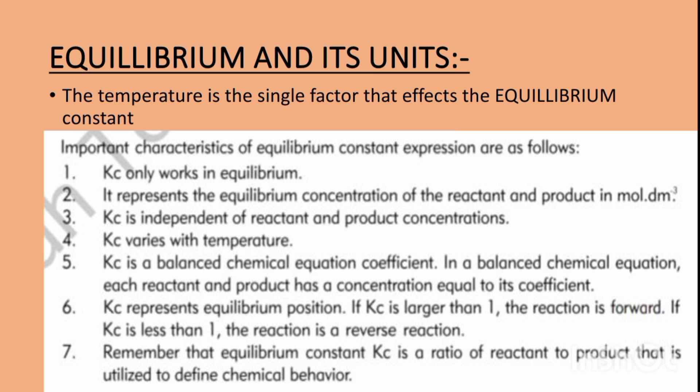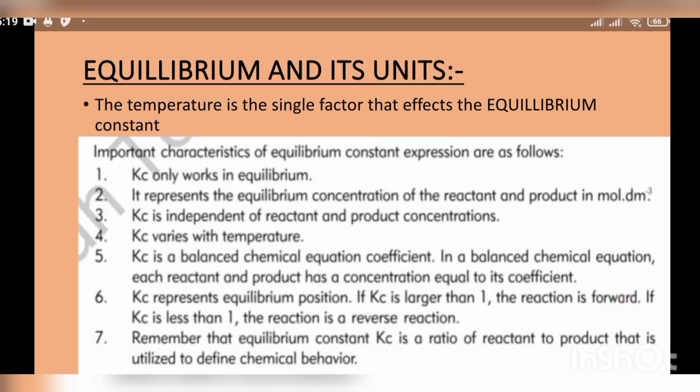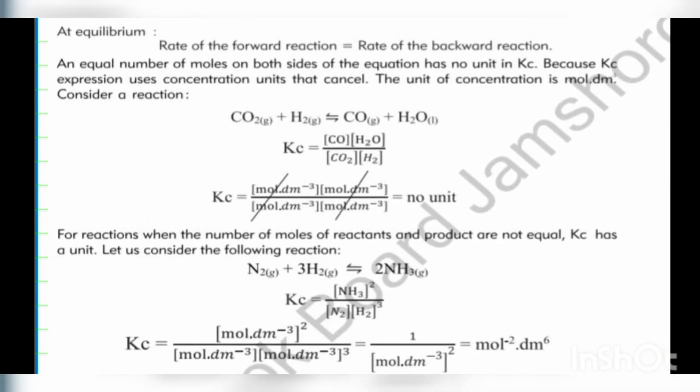Equilibrium constant Kc is a ratio of reactant to product used to define chemical behavior. Chemical behavior is related to temperature — some reactions take place at higher temperature while others take place at room temperature. Now let's move to the next slide where I will discuss how to find the equilibrium constant concentration unit.